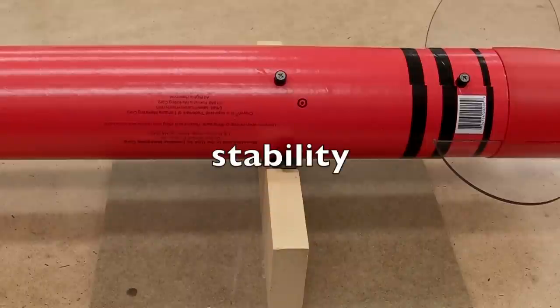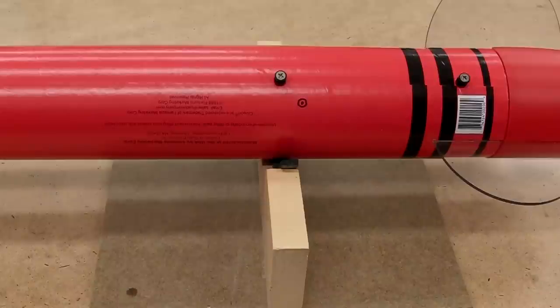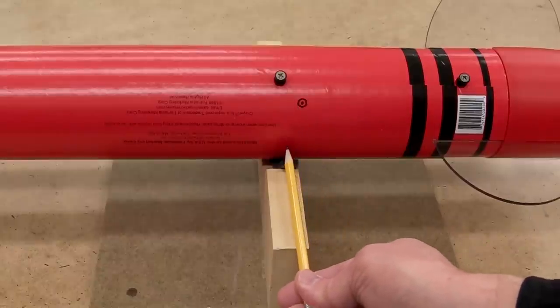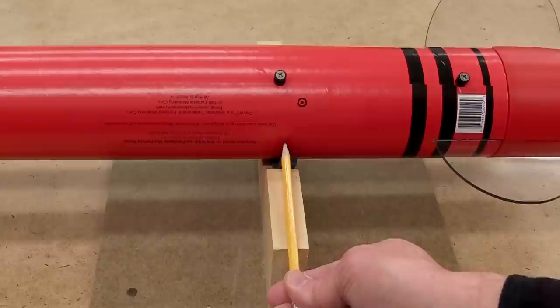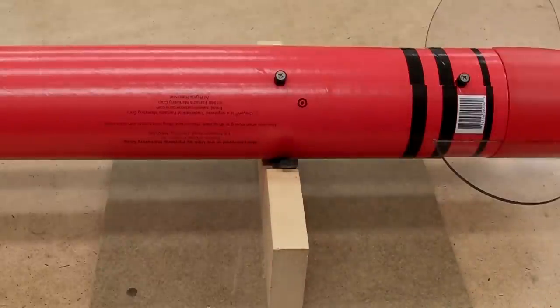For rockets of questionable stability, it's always good to verify that they really will be stable with the motors you plan to fly. From the simulator, we find the center of pressure and mark it on the rocket, and then we balance to find the dry center of gravity. Definitely not enough static stability margin.